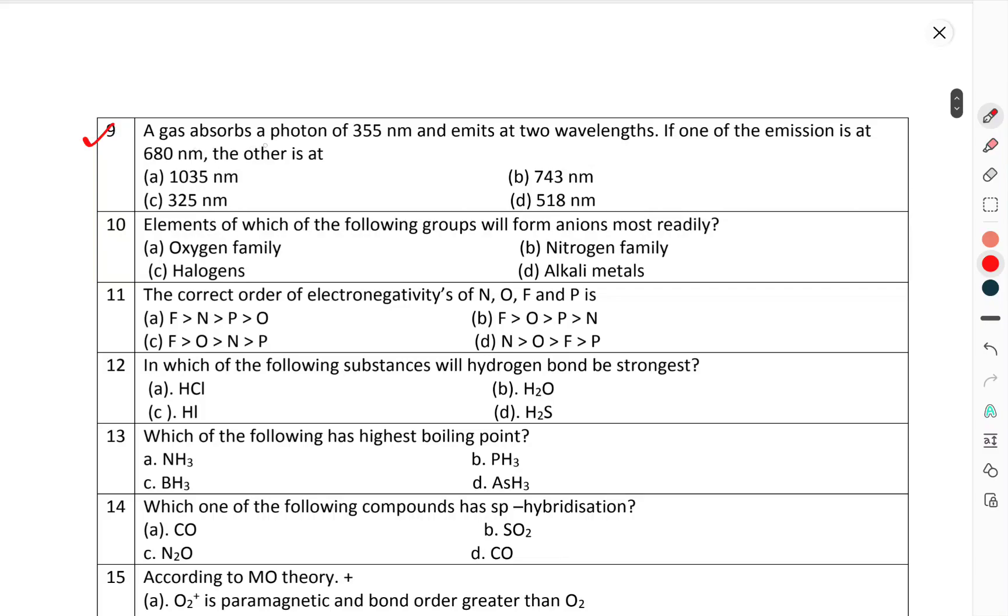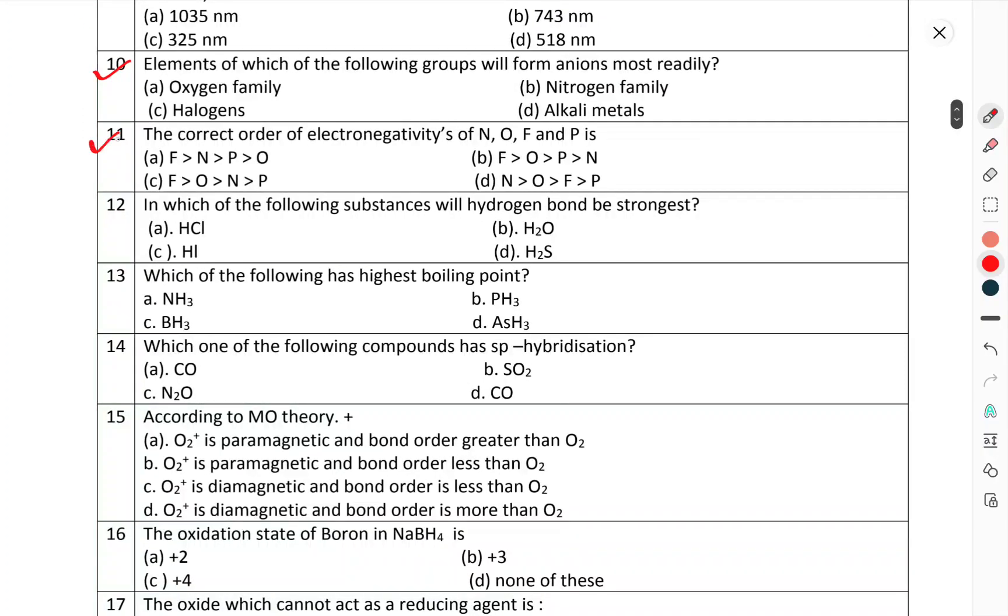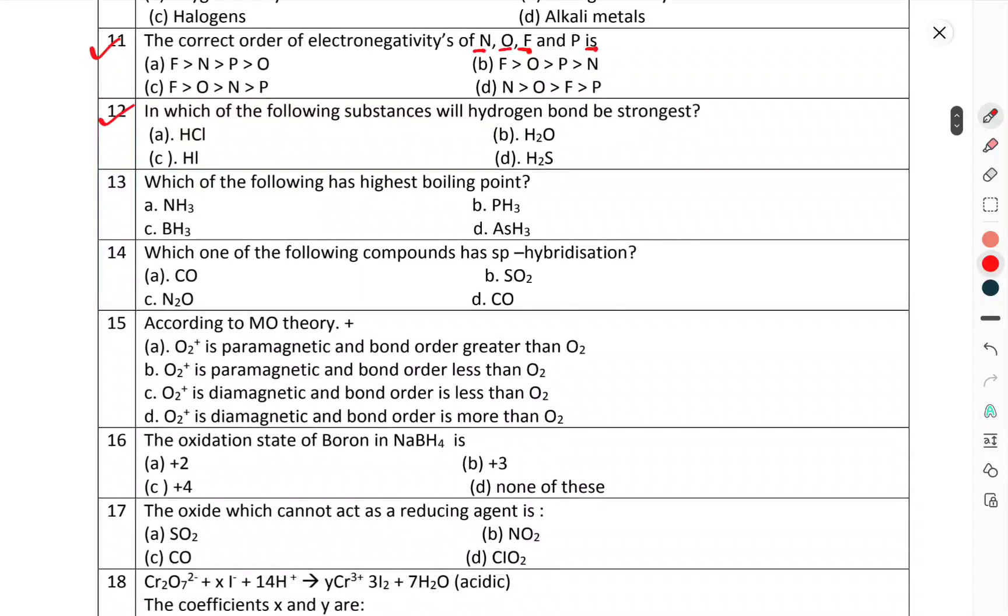A gas absorbs a photon of 355 nm and emits at 2 wavelengths. If one of the emission is at 680 nm, the other is at. Question number 10: Element of which of the following groups will form anions most readily? Question number 11: The correct order of electronegativity of nitrogen, oxygen, fluorine, and phosphorus.